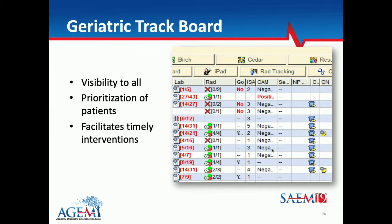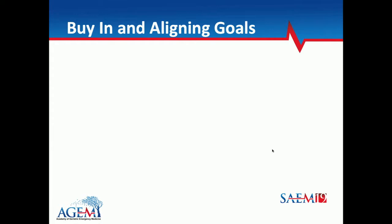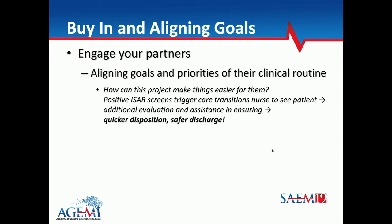The next key thing is buy-in and alignment of goals. You'll have much more success engaging your partners if they know why you're doing it and it's aligned with their own goals. For example, if you want to implement the ISAR, nurses might say 'yet another screen — you want me to do Ebola, suicide, abuse, now the ISAR?' Show them why it matters: if the ISAR score triggers someone else to evaluate the patient and facilitates additional evaluations for a quicker disposition and safer discharge, now your clinicians are on board. Make it relevant to their purpose.